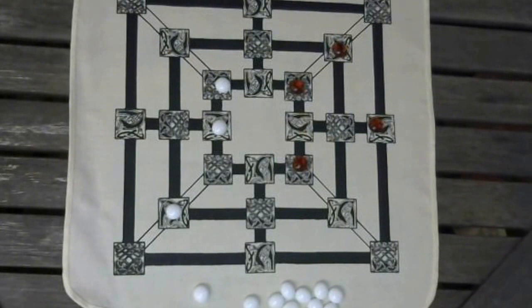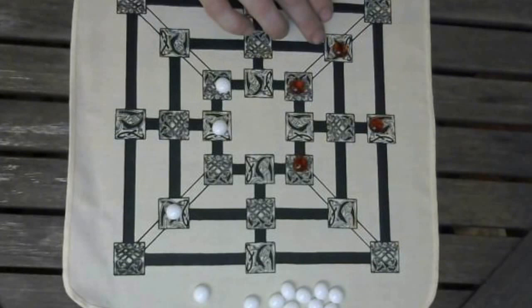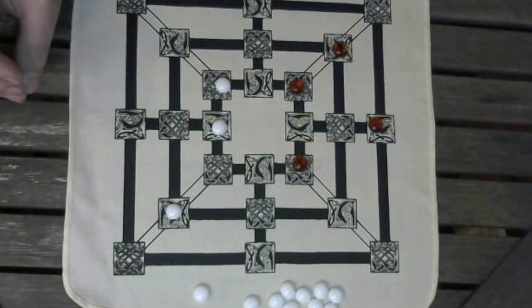Nine Man Morris starts out with 9 pieces per player, 12 man, 12 pieces. The difference in the board is Nine Man Morris does not use the diagonal lines connecting the corner spaces.